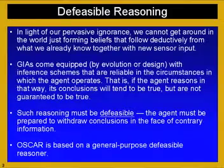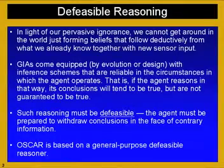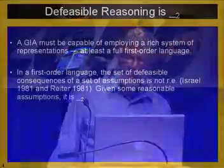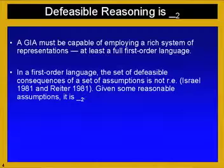Oscar is based upon a general-purpose defeasible reasoning. I presume that a GIA must be capable of employing a rich system of representations — at least the full first-order language. If we're really interested in human-level intelligence, we certainly can do that. That, however, creates problems. As was pointed out as early as 1981 by both David Israel and Ray Ryder, in a first-order language, the set of defeasible consequences is not recursively enumerable.